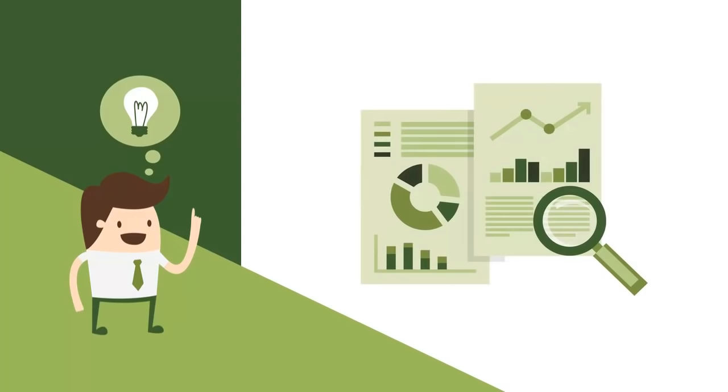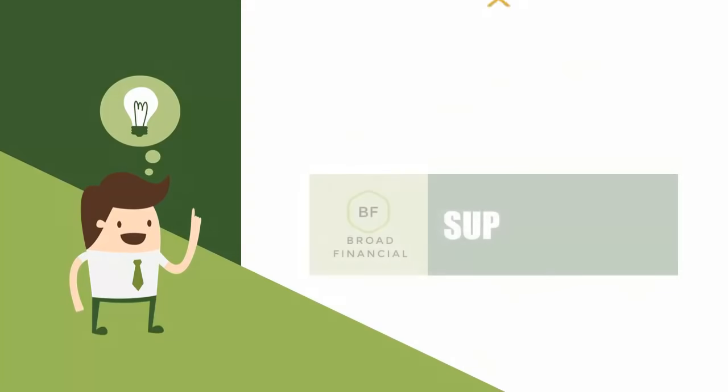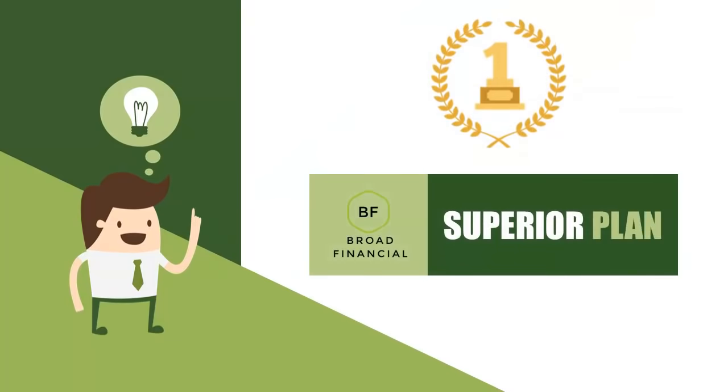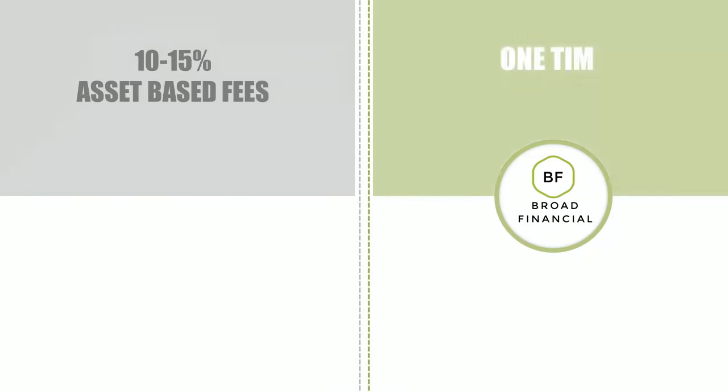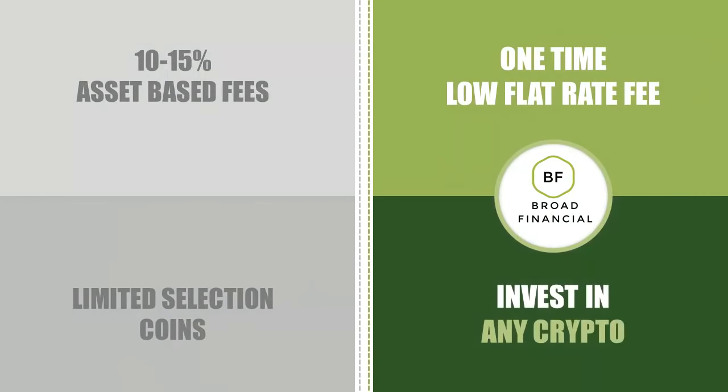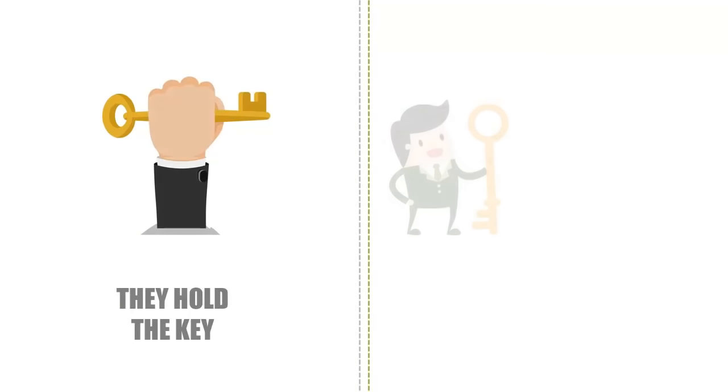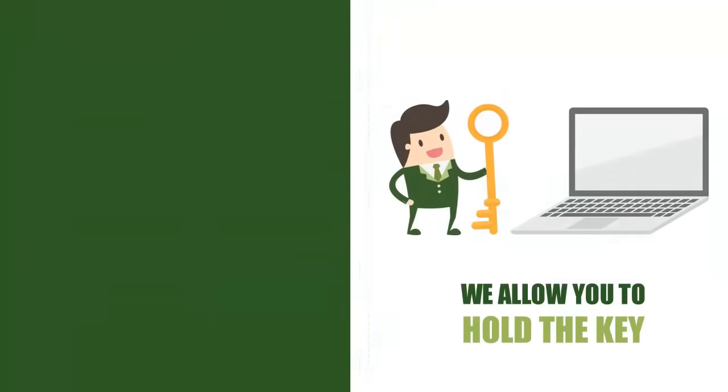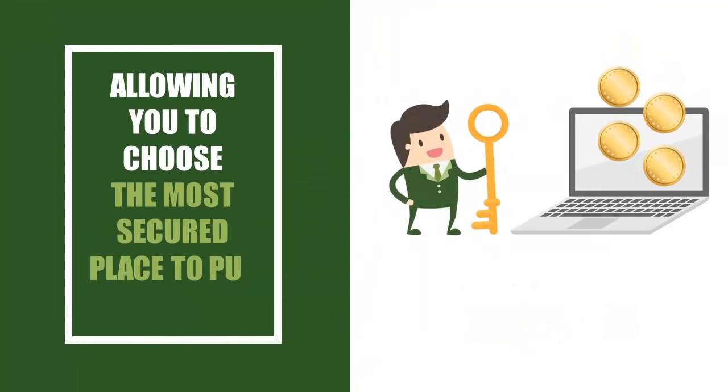He goes into detail about each side and concludes that the Broad Financial plan is vastly superior. For instance, whereas they charge 10 to 15% asset-based fees, we charge a one-time low flat rate fee. Whereas they offer only a limited selection of coins, our plan allows you to invest in any crypto. Whereas they hold the key, we allow you to hold the key, allowing you to choose the most secure place to put your coins.